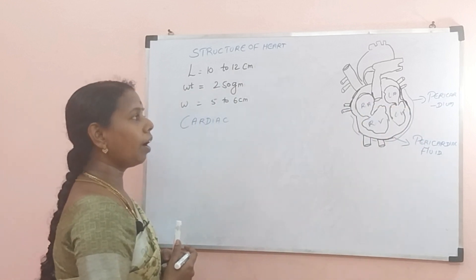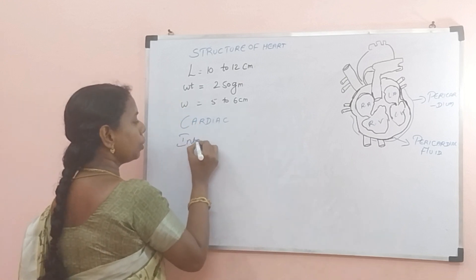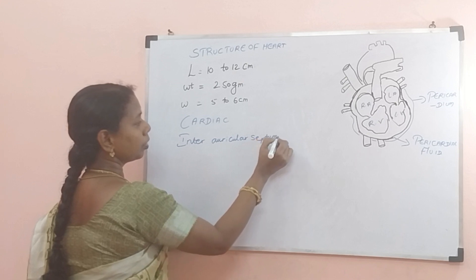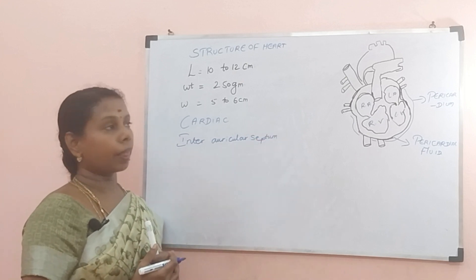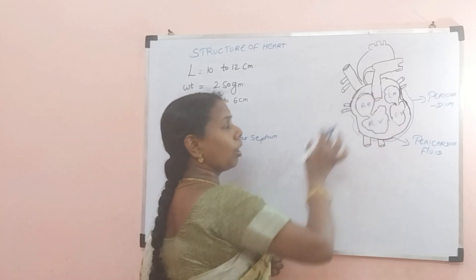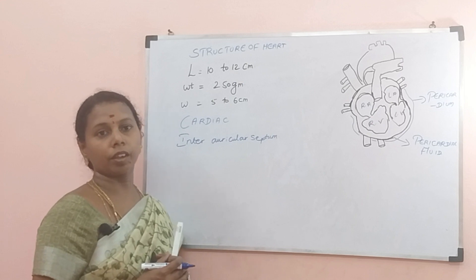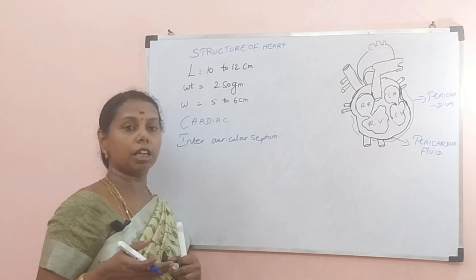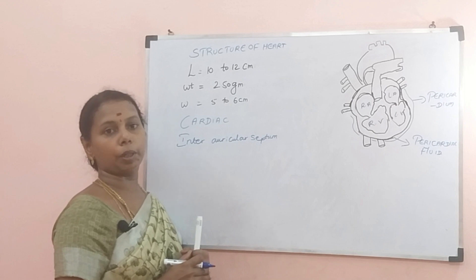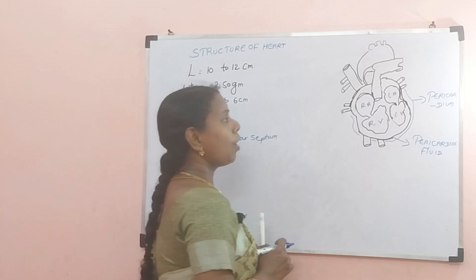The right auricle and left auricle are separated by the inter-auricular septum. This develops only after delivery. Before delivery, in the fetus in the mother's womb, there is no inter-auricular septum — there is a gap or hole called the foramen ovale. When the child is delivered and the placenta is released, it closes and becomes the inter-auricular septum. If it remains open, we call it a hole in the heart, which is the fossa ovalis.